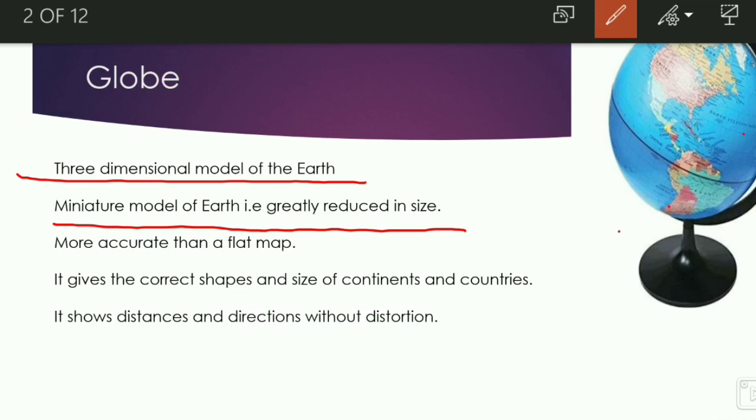A globe is more accurate than a flat map. It gives us the correct shape and size of continents and countries. It shows distances and directions without distortion as it is a three-dimensional model of the Earth.